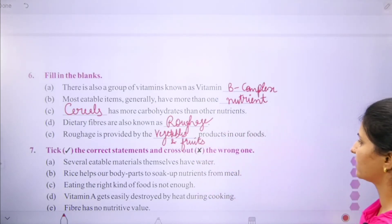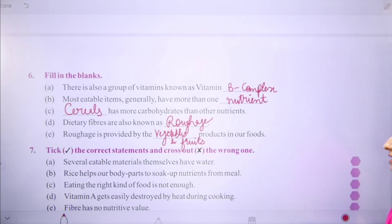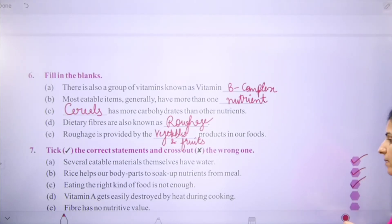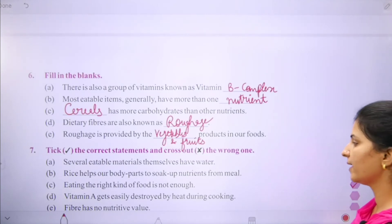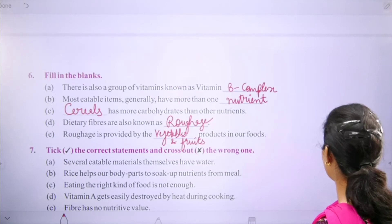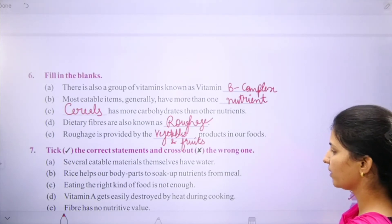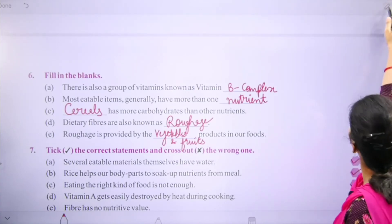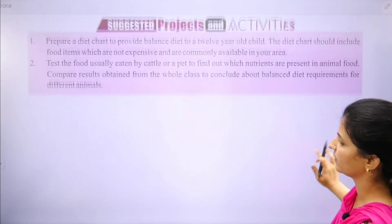Take the correct statement and cross out the wrong one. Several food materials themselves have water — correct. Rice helps our body parts to absorb nutrients from food — correct. Eating the right kind of food is not enough as it also needs to be in a balanced amount — correct. Vitamin C gets easily destroyed by heat during cooking — correct. Fibers have no nutritive value; fiber just adds bulk in our body — correct.